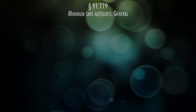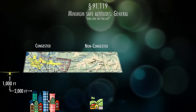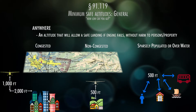91.119 talks about minimum safe altitudes. If you're over a congested area or a yellow part on your chart, you have to be at least 1,000 feet above the highest obstacle within a horizontal radius of 2,000 feet. Over a non-congested area, you have to be at least 500 feet above the surface. Over a sparsely populated area or over water, you have to be at least 500 feet away from any person, vessel, structure, or vehicle — so it doesn't necessarily mean height, it could be lateral as well, especially over water. The first part also says you have to be at an altitude that allows you to land without causing damage if you lose an engine.